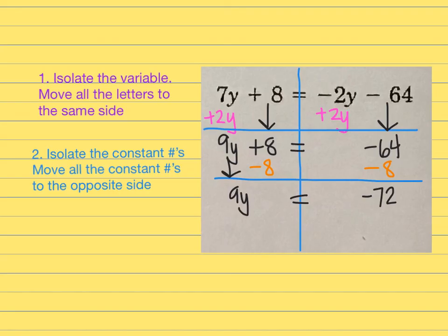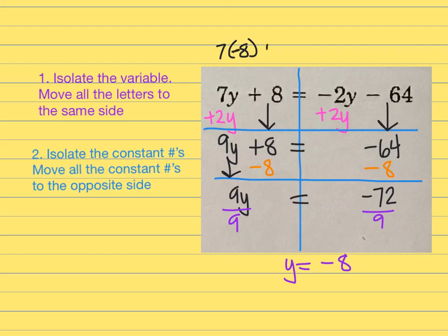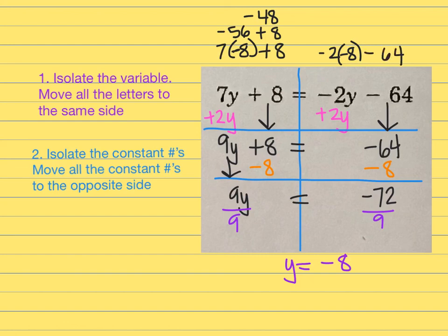The last step: 9 times something is negative 72. If you know it, great; if not, divide both sides by 9. That gives Y equals negative 8. To check: substituting negative 8 — on the left, 7 times negative 8 plus 8 is negative 56 plus 8, which equals negative 48. On the right, negative 2 times negative 8 is positive 16, minus 64 is also negative 48. Both sides match — I did it right!